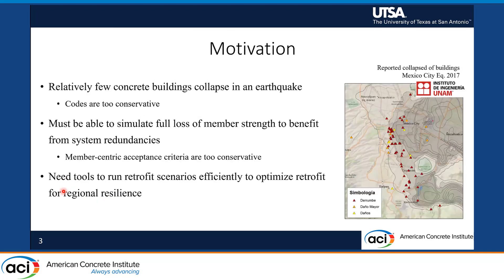Quick motivations: the figure on the right shows the Mexico City earthquake. Only a handful of buildings collapsed during that event, whereas the codes are telling us a lot more should collapse, as they are sometimes quite a bit conservative. If we want to be that conservative, especially for retrofitting purposes at the regional level, that would cost too much for society. That's when the team started to look for a more advanced simulation to assess the performance of these buildings better.